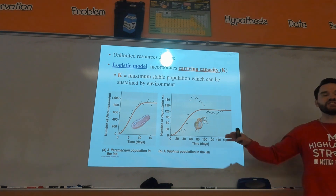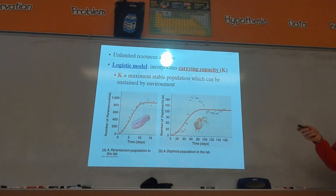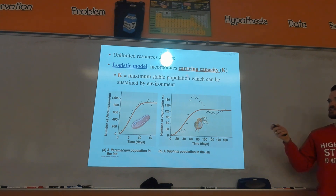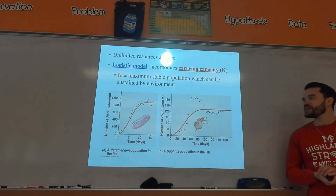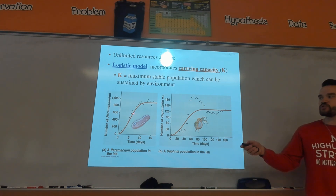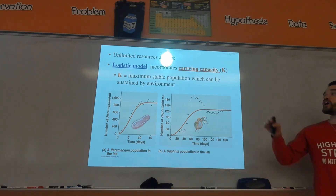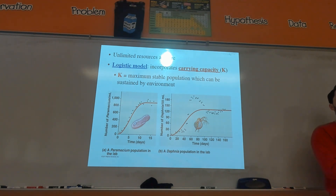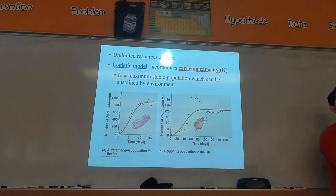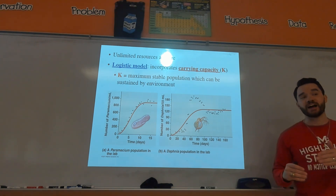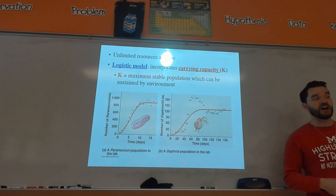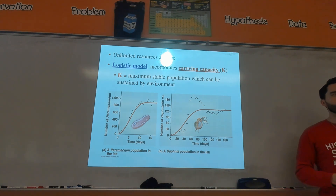How most populations actually look is the logistic model, which has a carrying capacity called K — make sure you know that K stands for carrying capacity. Things keep growing and growing, but eventually you run out of resources and there's a cap on the population. The carrying capacity is specific to a species and a particular environment — so the carrying capacity for a species of bird on one island may not be the same as on a different island. It can also change over time, for example as climate changes in an area.